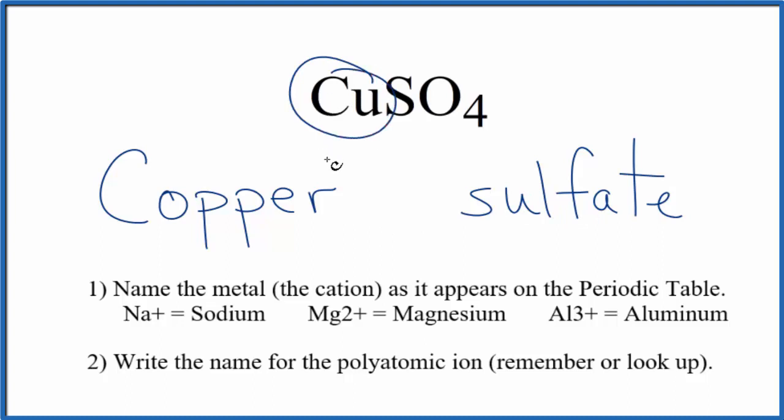But copper, we said that's a transition metal. And transition metals can have a different charge, depending what they're bonded to. So when we look at this, it's bonded to this sulfate ion here. Sulfate, the whole thing has a two minus ionic charge. So the copper, that has to be two plus for these charges to add up to zero, to have a net charge of zero.